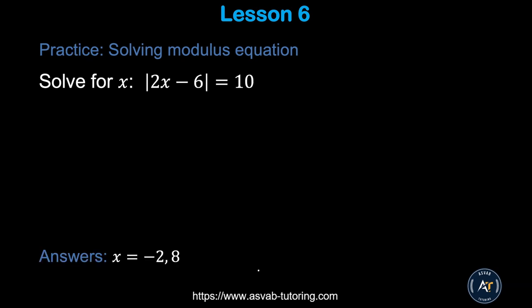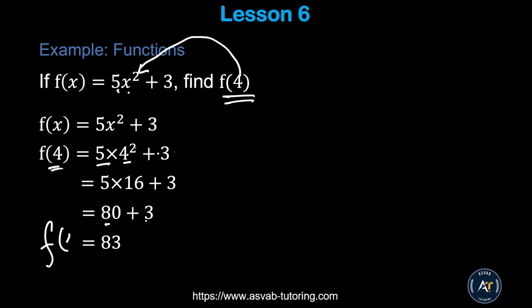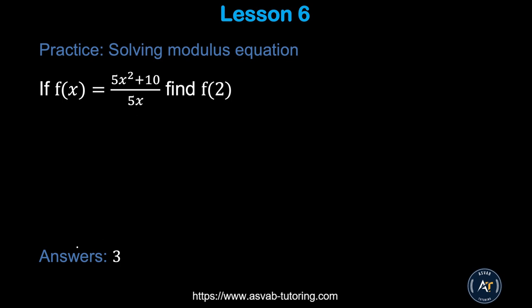Try the practice problem yourself and make sure you get the correct answer. Finally, we'll learn basic functions. A function gives exactly one y value for each x value. For f(x) = 5x² + 3, find f(4): substitute x = 4 to get f(4) = 5(4²) + 3 = 5(16) + 3 = 80 + 3 = 81. Practice the similar problem and make sure you get f(2) = 3.